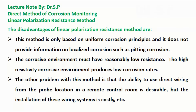The disadvantages of the linear polarization resistance method are: this method is only based on uniform corrosion principles and does not provide information on localized corrosion such as pitting corrosion. The corrosive environment must have reasonably low resistance, as a high resistivity corrosive environment produces low corrosion rates. Another problem with this method is that direct wiring from the probe location to a remote control room is desirable, but the installation of these wiring systems is costly.